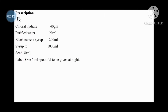Prescription: Chloral Hydrate 40g, Purified Water 20ml, Black Currant Syrup 200ml, Syrup up to 1000ml, quantity to be prepared is 30ml. Label: one 5ml spoonful to be given at night.